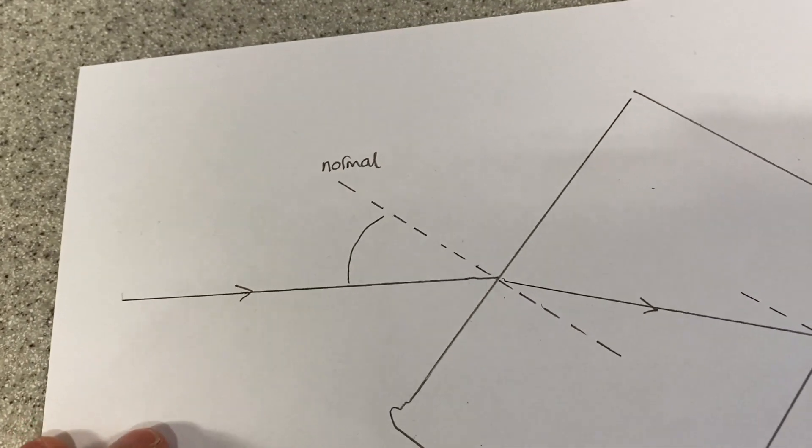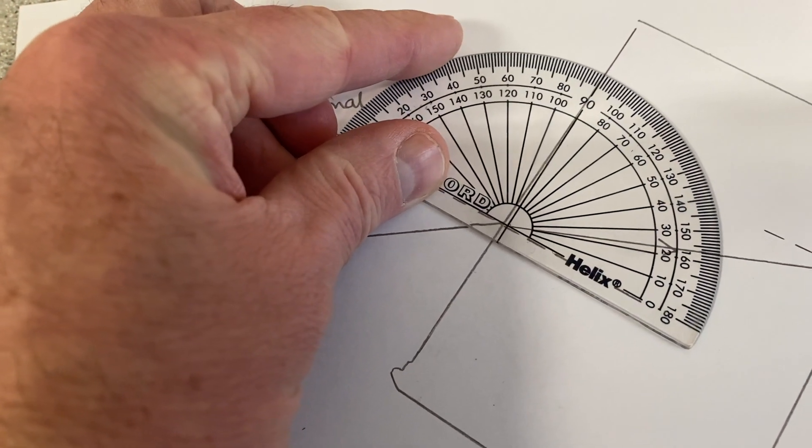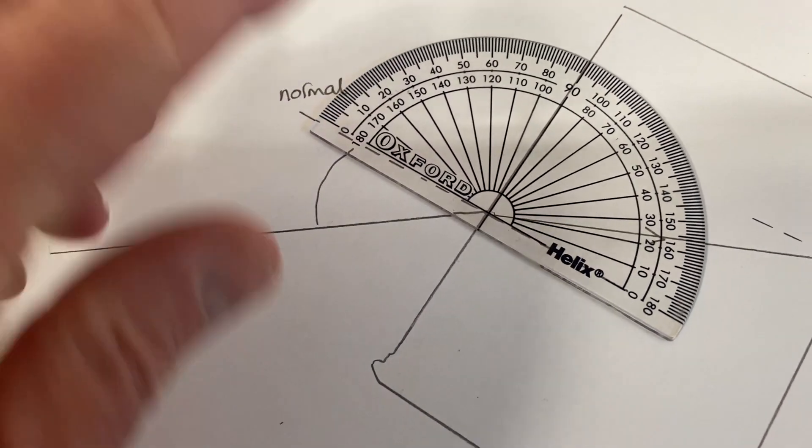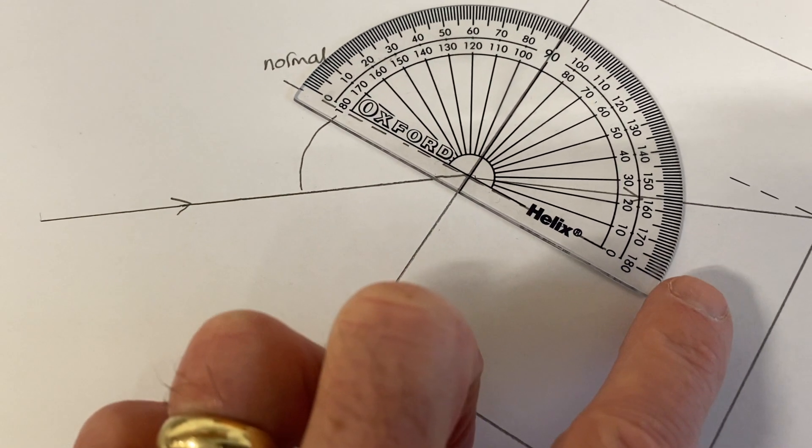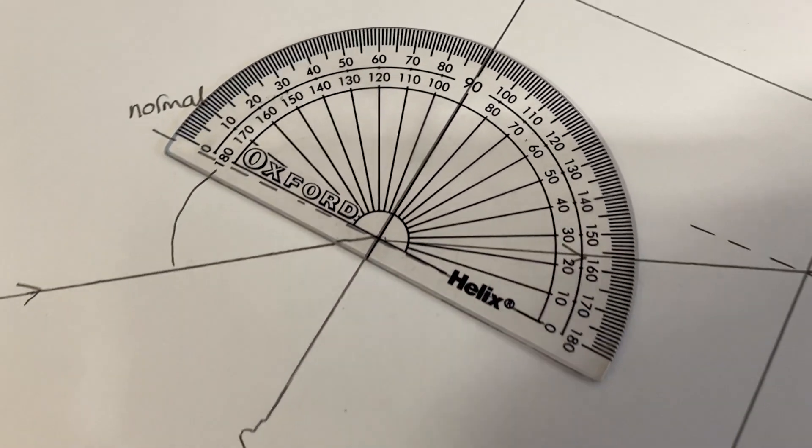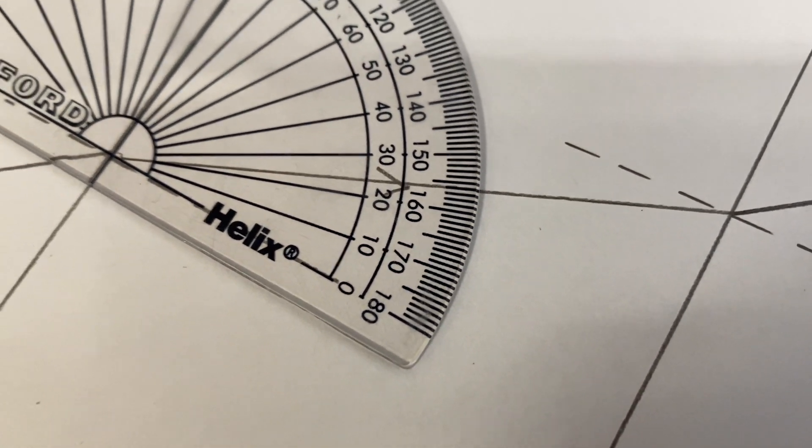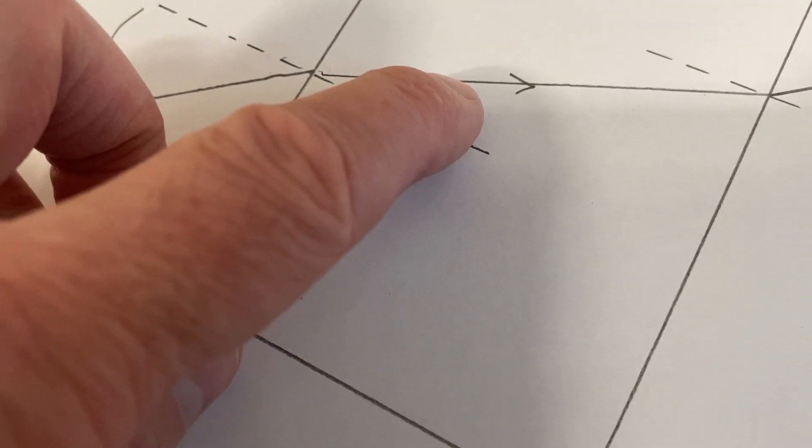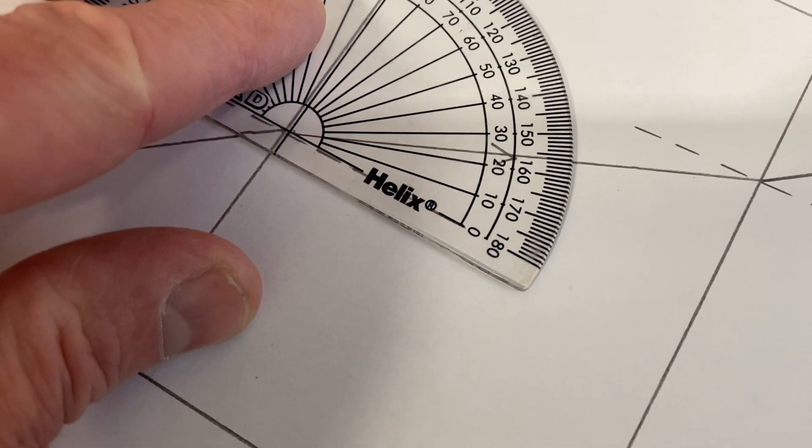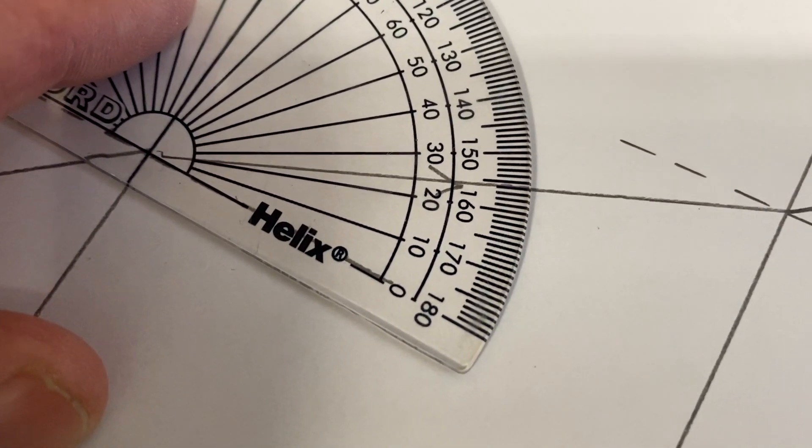If we want to measure the angle in the glass, we turn our protractor around, put the centre of the protractor at the normal and at the glass. So the centre of the protractor is there. And again, we can start at zero, and our angle here is 24 degrees. That angle there, put my protractor on, follow the line out. Protractor has got zero in the normal. That's about 24 degrees.